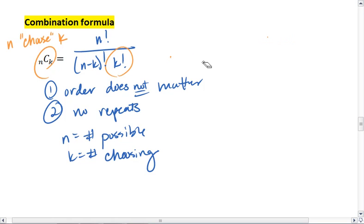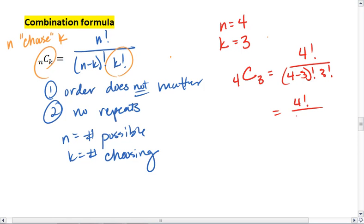So for the example above, we had four toppings to choose from and we were choosing three of them. So we have 4 choose 3, which is 4 factorial over 4 minus 3 factorial times 3 factorial, or 4 factorial over 1 factorial 3 factorial. 4 factorial over 3 factorial, which is just 4.